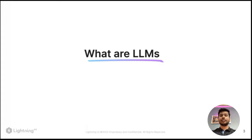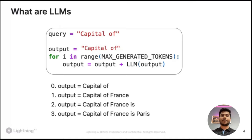In this session we will be mostly focused on open source large language models. Let's give you an overview of the functioning of LLMs. LLMs are basically next-word completion machines. For example, let's understand this with an example. I have a query 'capital of' and I feed this query to my large language model to generate a whole sentence.